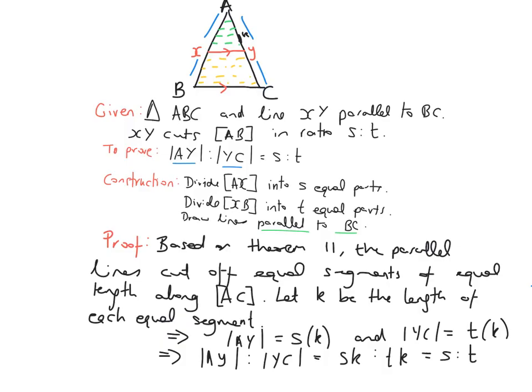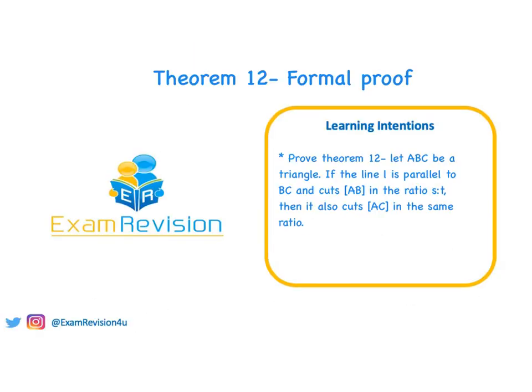And that's exactly what we were trying to prove at the start of this question, that the distance between AY compared or in proportion to YC equals the ratio S to T. And we can write QED at the end, and we're finished the proof of Theorem 12. Thanks for watching our video where we proved Theorem 12.